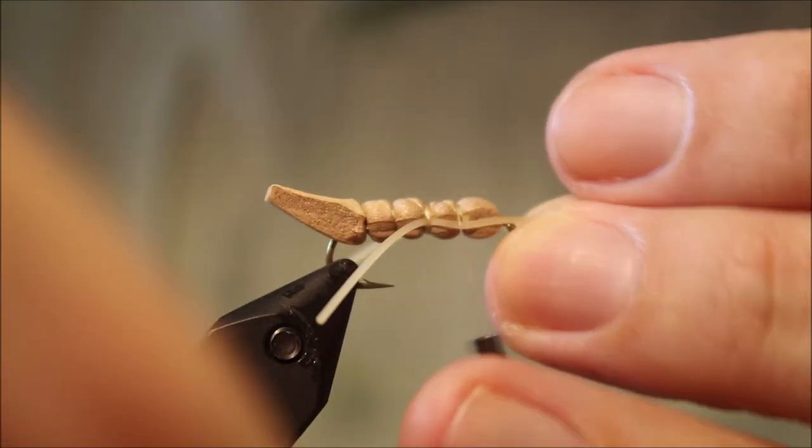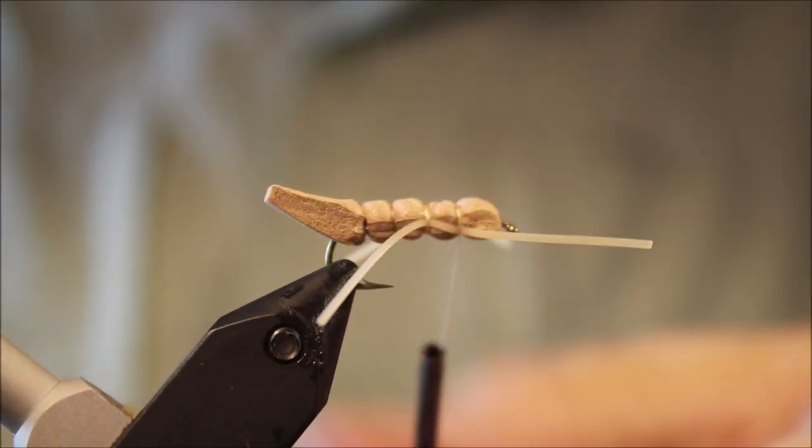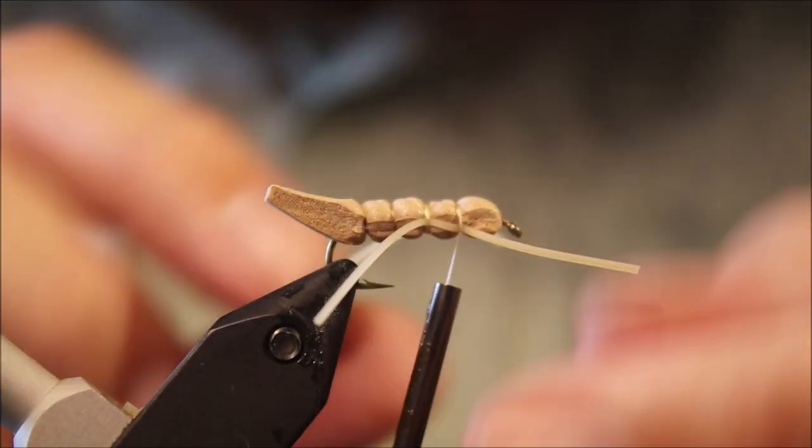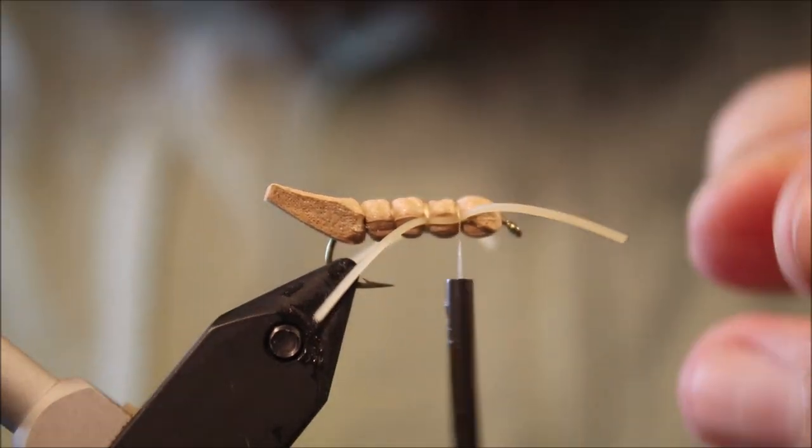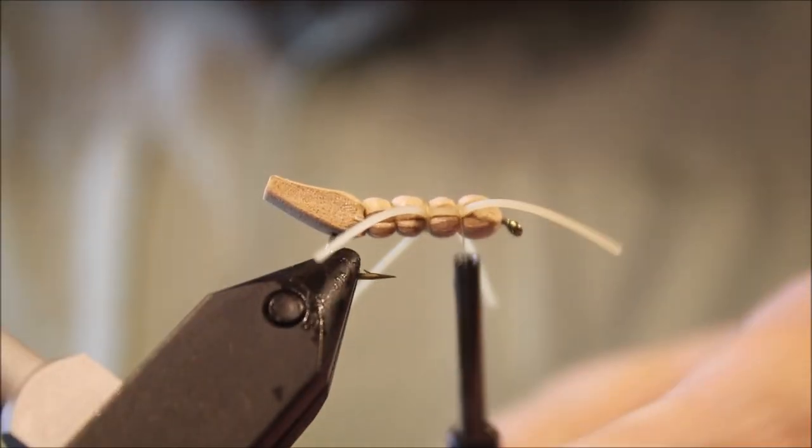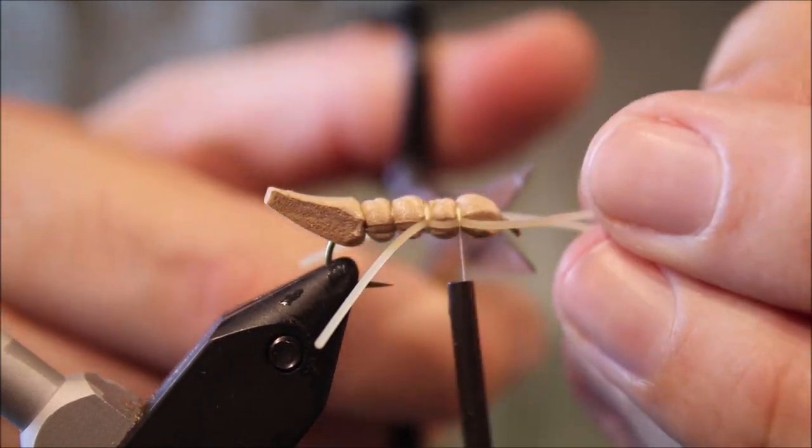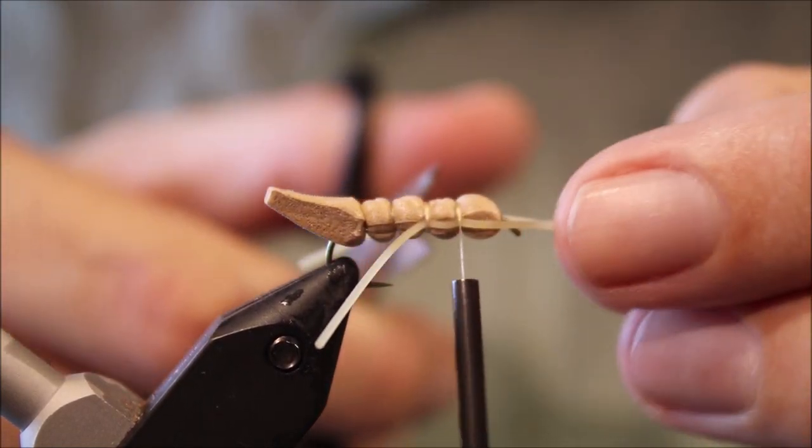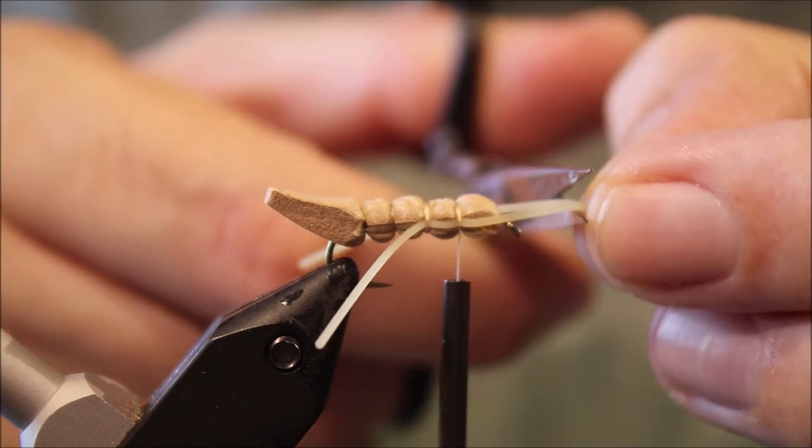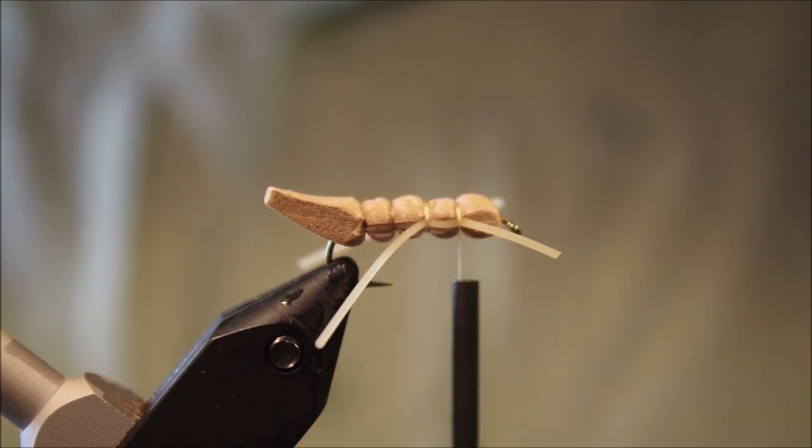And then we'll just pull the legs forward, both together, catch them in at the front. Again, just take your time, get them positioned. And cut these shorter, about a half or a third of the length of your back legs.